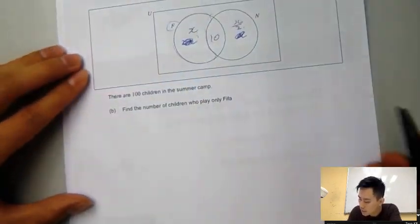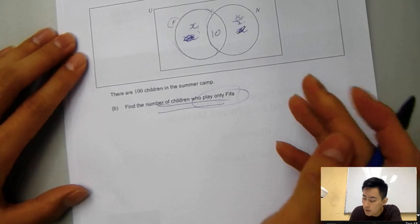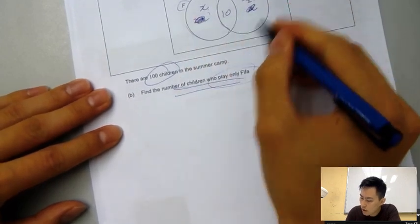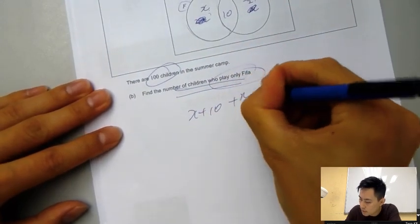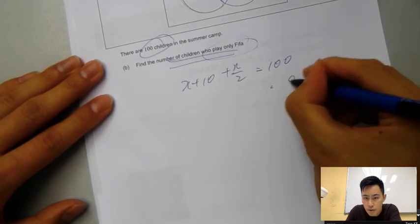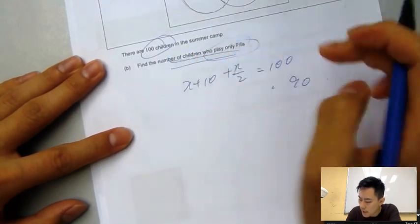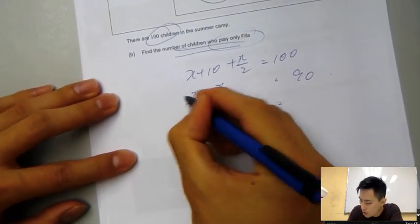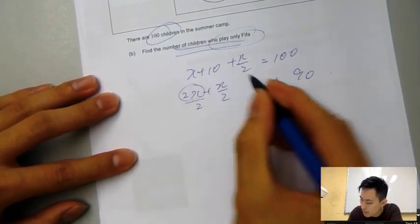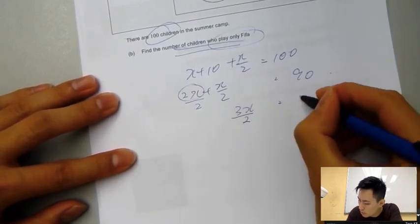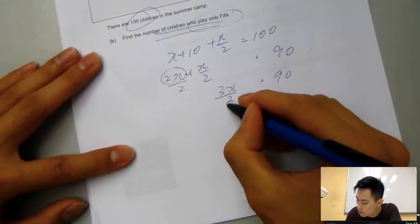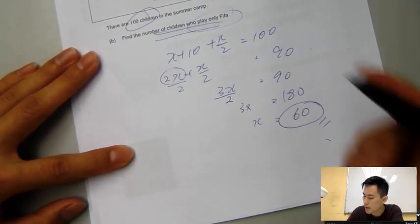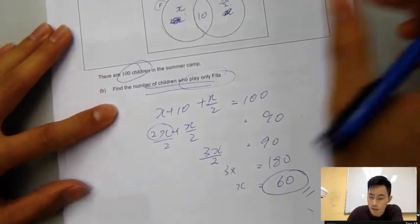After you get this idea, you need to solve for the number of children who play FIFA. We have 100 children in the summer camp, so you just need to add all this up: x plus 10 plus x over 2 equals 100. You have 90 right here, and x plus x over 2. Then add 2 at the bottom and this added on top, you have 3x over 2 equals 90. Just multiply 2 to the right side, 180, 3x, and then x is 60. So the number of people playing FIFA would be 60.